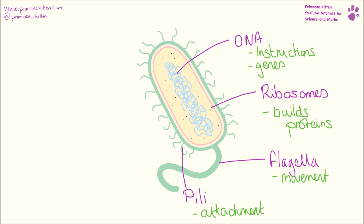In the middle, the yellow stuff is the cytoplasm. This is where the majority of the functions of the cell are actually carried out — that's where all the enzymes work and where most of the stuff that the cell actually does goes on.